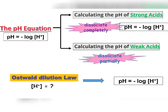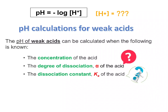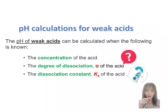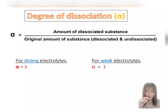By using the pH expressions, we can then determine the pH value of the weak acid. For the degree of dissociation, we just need to divide the amount of substance that is ionized by the initial amount of the substance.